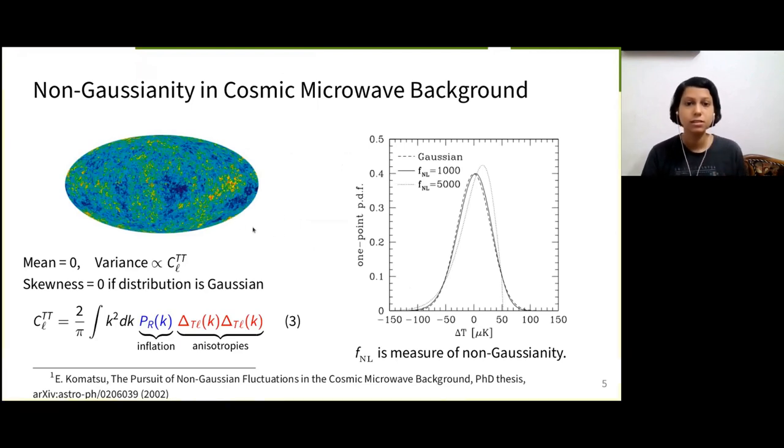The CMB is the earliest and farthest we can see, and it is almost a black body with small anisotropy. If we measure the temperature for single pixel values of the CMB sky and lay them as a histogram, we will see a nearly Gaussian or normal distribution, as can be seen as the dashed line in this figure on the right.